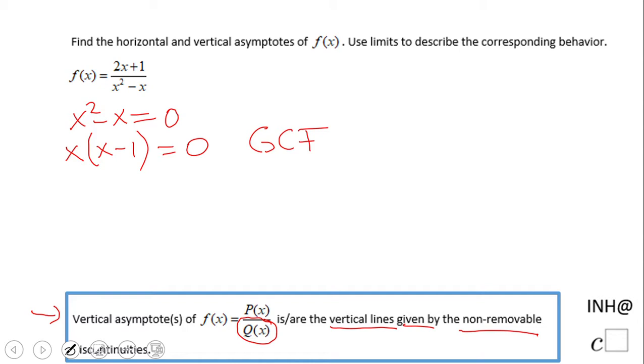Then we have a product equals zero, so using the zero product property, we make the first factor equal to zero, which gives us x equals zero, and the second factor equals zero, which gives us x equals one.